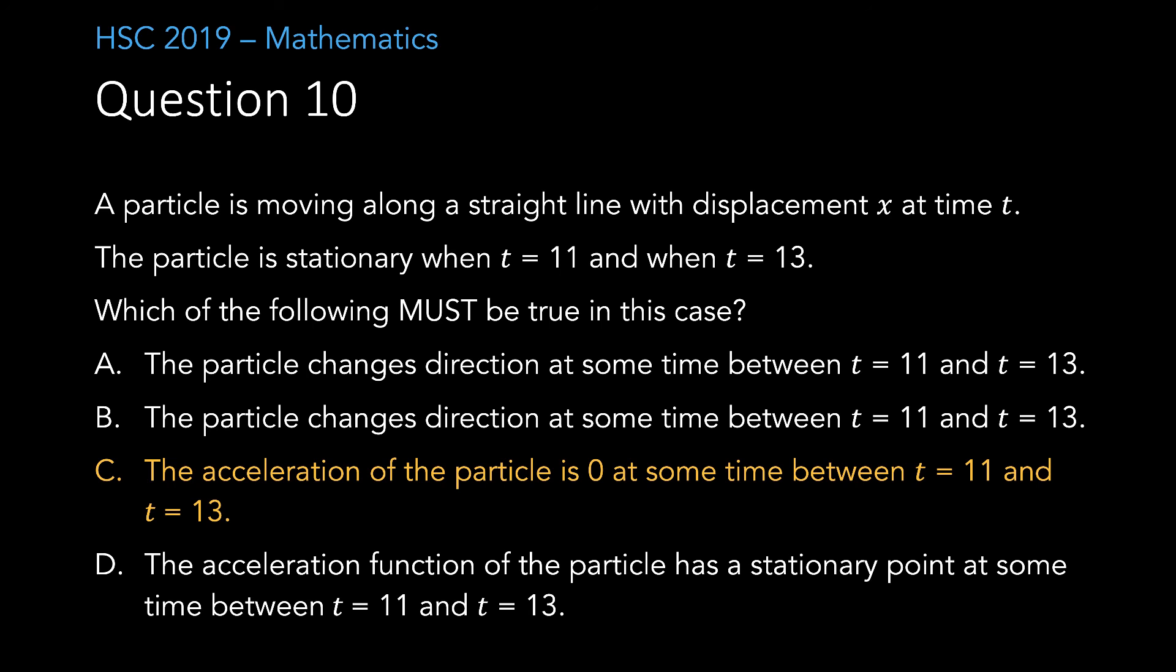Let's assume that it doesn't have a stationary point. Therefore, the velocity function must be either increasing or always decreasing between t equals 11 and t equals 13, as it can never switch. However, if this is the case, the velocity function can never come back to 0. Therefore, this is impossible, and it must have a stationary point.